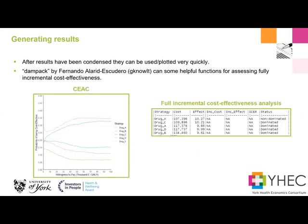Once you've got your results, you can then just treat them like you would with any cost-effectiveness analysis. I use some functions from the DAMPACK package available on GitHub by Genowit to help in this situation where I've got a fully incremental cost-effectiveness analysis going on because there are five possible treatment interventions. We can pull the ICER and do cost-effectiveness analysis, and once you've got your mean qualities and your mean costs, it's just normal health economic analysis from this point on.